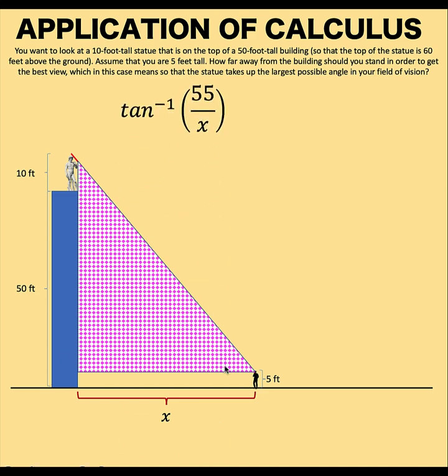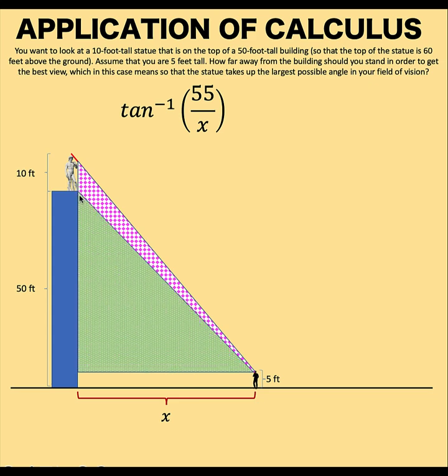Now, let's draw another triangle, this time connected to the bottom of the statue. The angle of elevation here would be the inverse tangent of the opposite side, which is, in this case, 50 minus 5, which is 45 divided by x. And if we subtract these two angles, the resulting difference would be the measure of this theta, which is the angle that we would like to maximize.